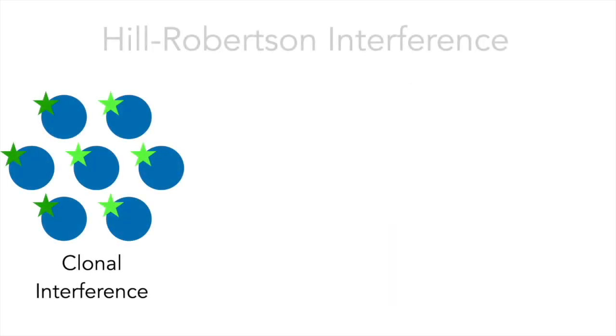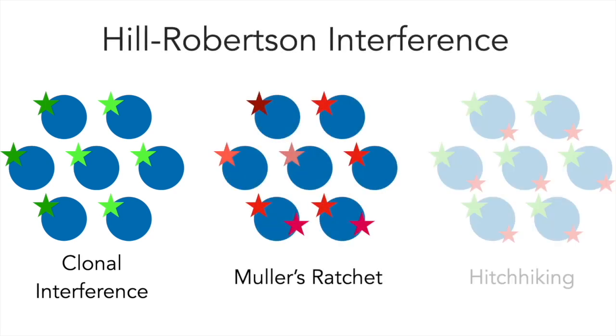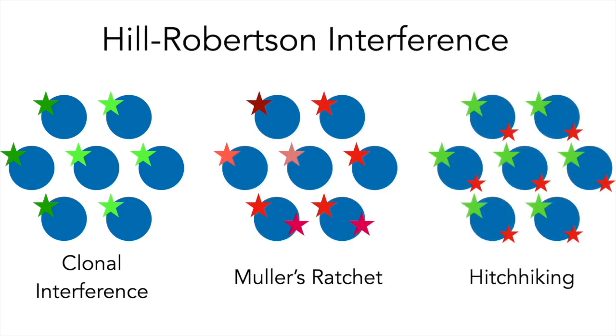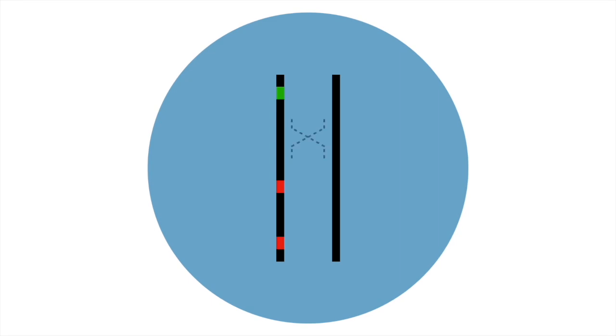All three of these processes that impede the efficiency of selection are collectively referred to as Hill-Robertson interference. In the 1950s, Hill and Robertson noted that recombination, which reshuffles combinations of mutations, alleviates this interference between selective forces acting on multiple mutations.